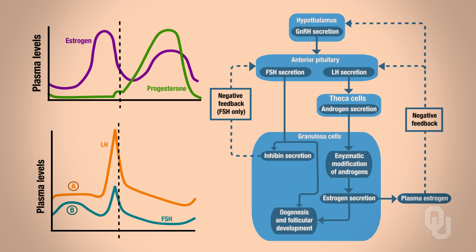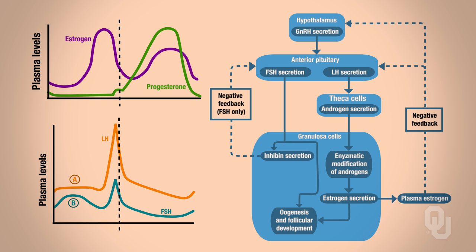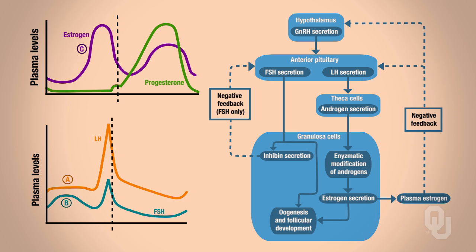Looking at the graph for the estrogen increase: as a result of LH secretion (labeled A) targeting the thecal cells, which secrete androgens, which then target the granulosa cells, which cause enzyme-catalyzed reactions giving rise to estrogen — we see estrogen levels increasing on the top graph, labeled C. By the end of this mid-follicular phase we have a dominant follicle — more specifically, a secondary follicle. That concludes the mid-follicular phase. The next video will discuss the late follicular phase.